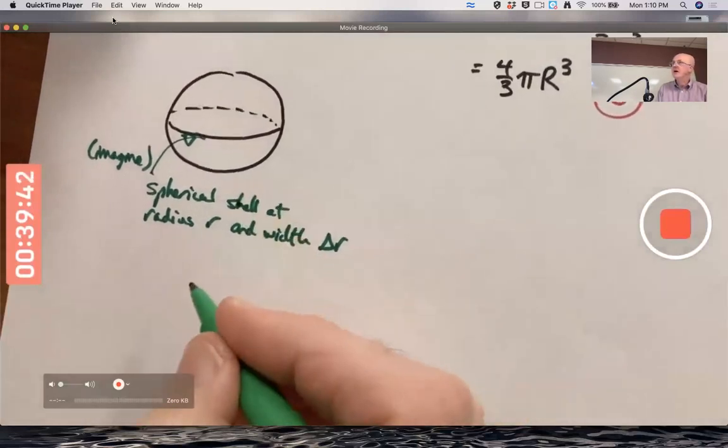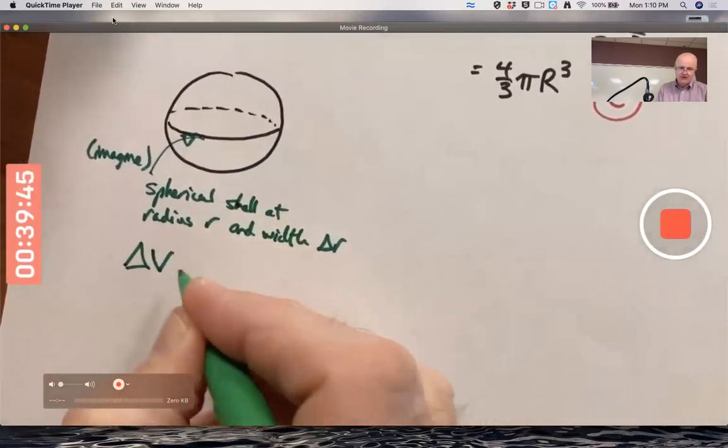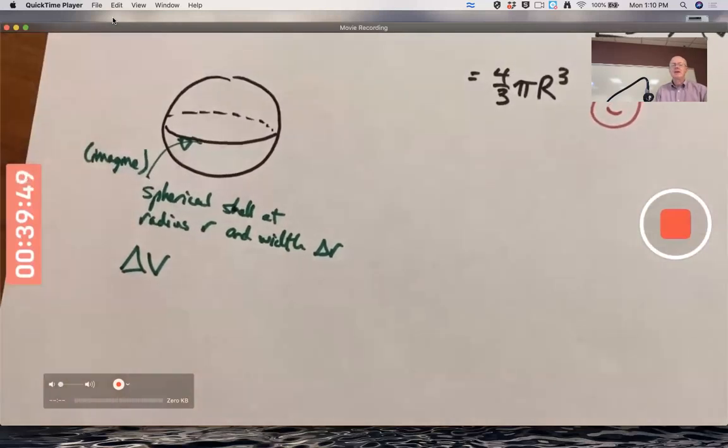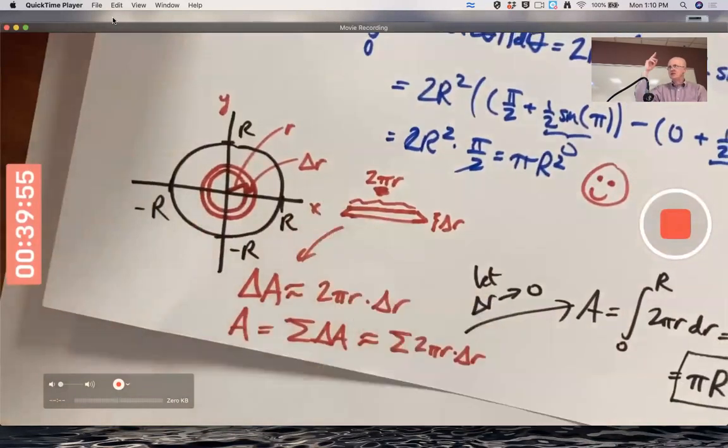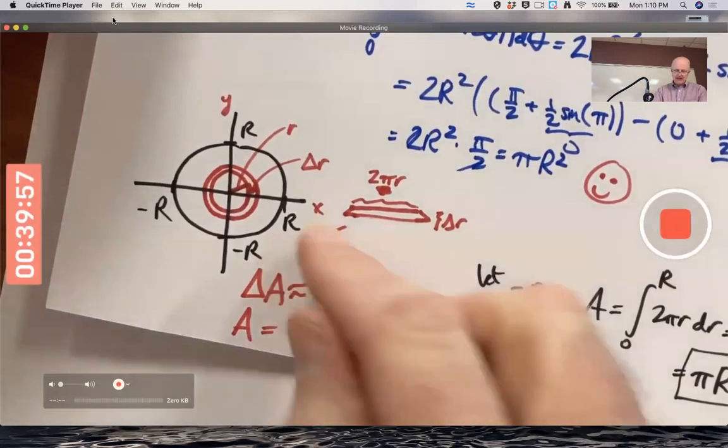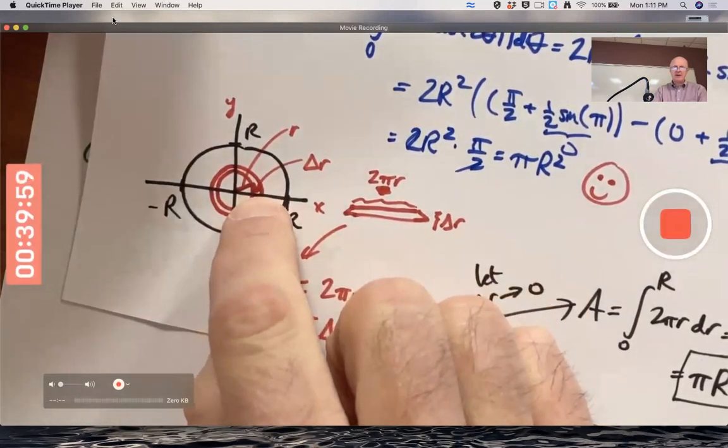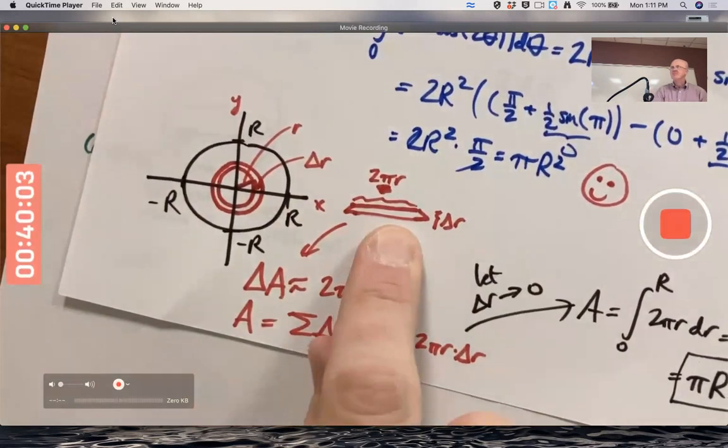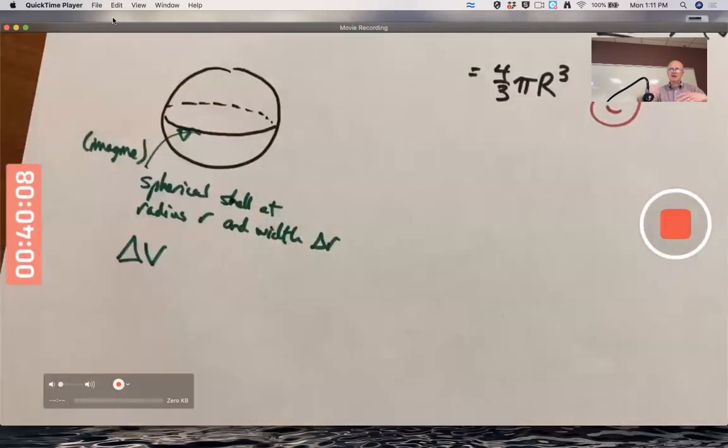What is the volume of that thin spherical shell? What did I do back in the two-dimensional situation? I said, get a scissors out and cut the thin ring right there and unroll it so it looked like that. Can I do such a thing with a three-dimensional situation?